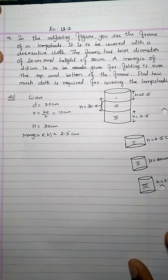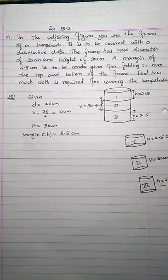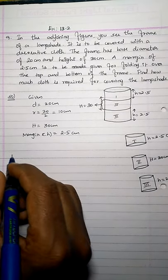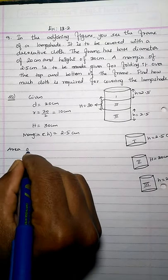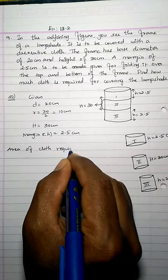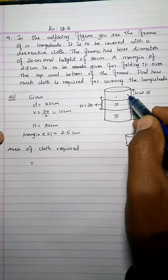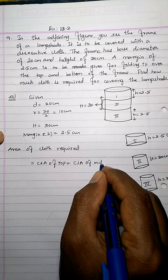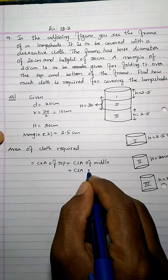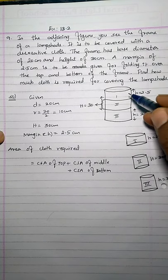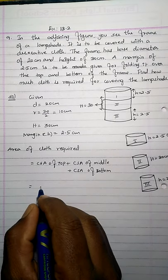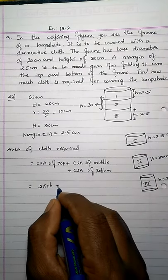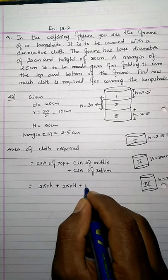To find the total area, we use the curved surface area (CSA) of the three parts. The CSA formula for a cylinder is 2πRH. Therefore, area of cloth required = CSA of top margin + CSA of middle frame + CSA of bottom margin. Using the formula: 2πRh + 2πRH + 2πRh, where small h is the margin height and capital H is the frame height.